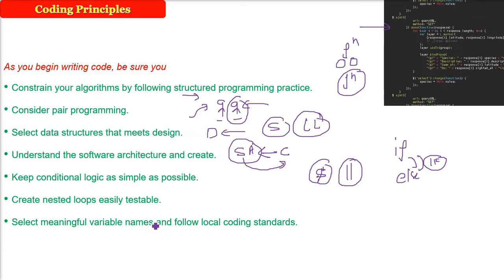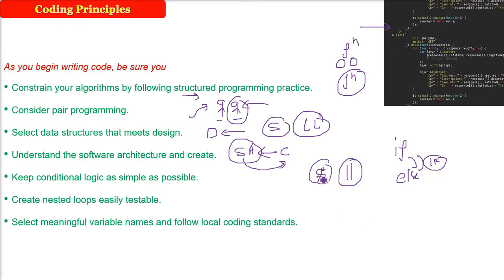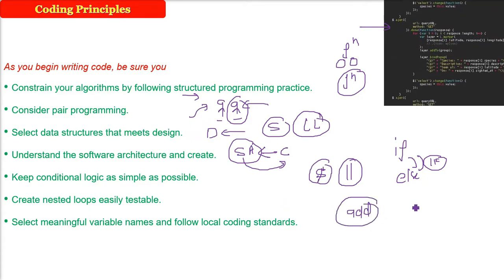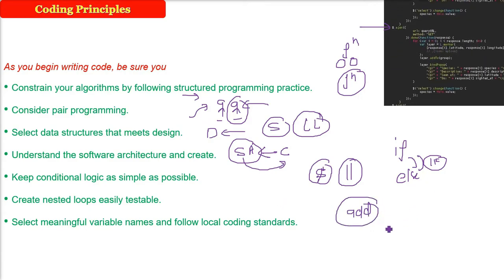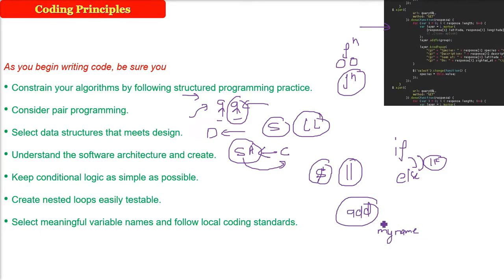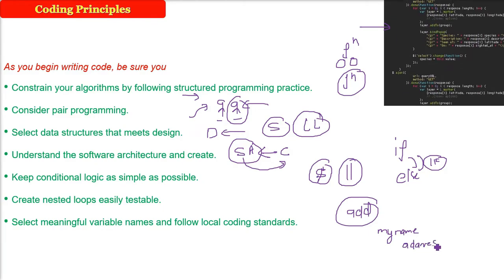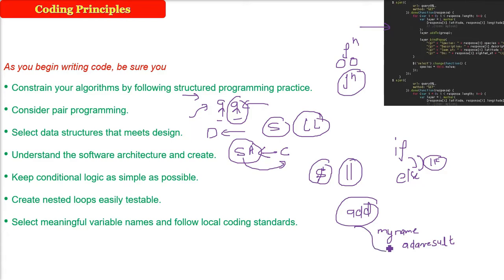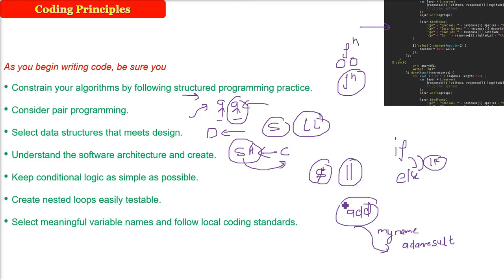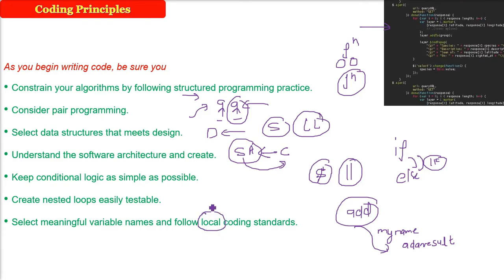You have to choose meaningful variable names. For example, you're making a function called add and returning some value. Naming it 'my find day,' 'one find day,' 'my name'—these are not logical. The variable name should be something like 'add result' or 'result of addition.' These are meaningful names. There are many coding standards in industry being followed like MISRA. But if the company has decided, you must use the local coding standards.